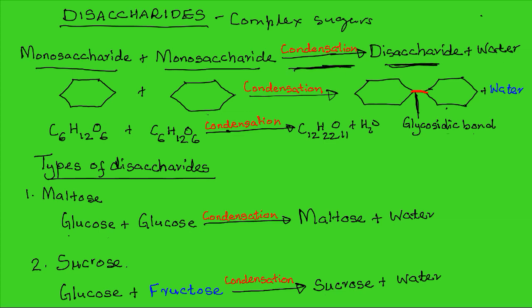In the process of condensation, water is also lost. A water molecule is lost as a result of the condensation process. This is because two molecules of monosaccharides are being condensed into one molecule of disaccharide with the loss of a smaller water molecule.